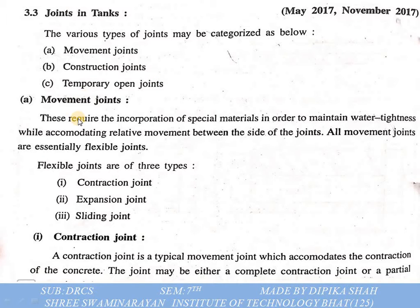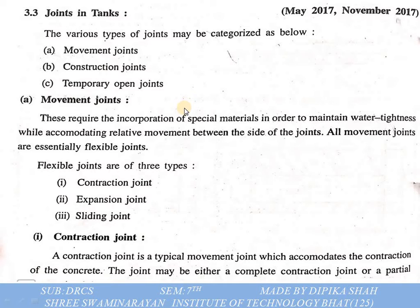What are movement joints? These require the incorporation of special materials in order to maintain water tightness while accommodating relative movement between the sides of the joint. All movement joints are essentially flexible joints. We provide movement joints to give flexibility. There are three types: contraction joint, expansion joint, and sliding joint.